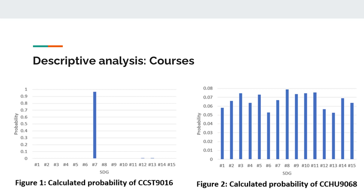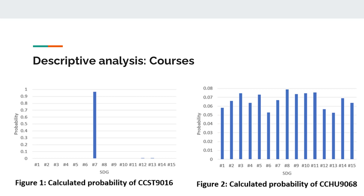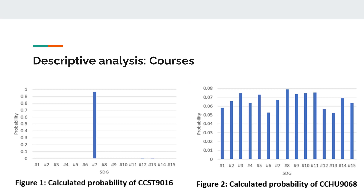Here are the calculated classification probabilities for two courses. For the course "Energy: Evolution and Environmental Impacts," this course is obviously tied to SDG 7, which is Affordable and Clean Energy. On the other hand, for the course "Shaping Our World," the probability is relatively average across each SDG. Therefore, the course cannot be classified to any single SDG from 1 to 15. This judgment is also aligned with human judgment.